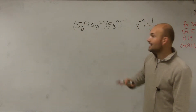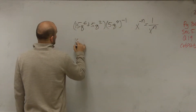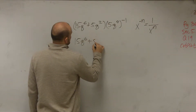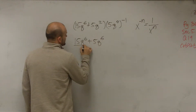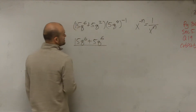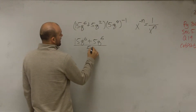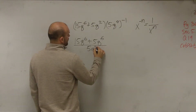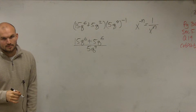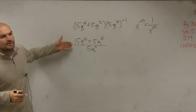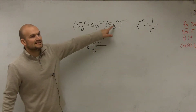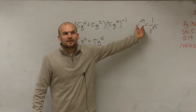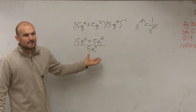In reality, I can rewrite this problem as 15q to the sixth plus 5q squared divided by 5q to the fourth. That's all I'm rewriting because this can be rewritten as your denominator, so it's essentially being divided.